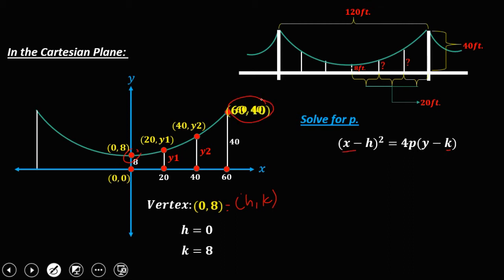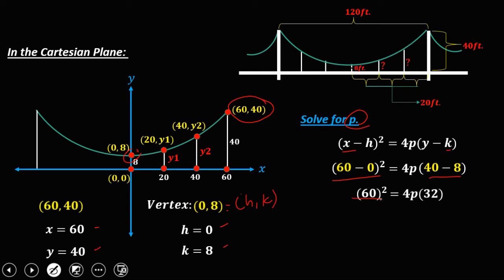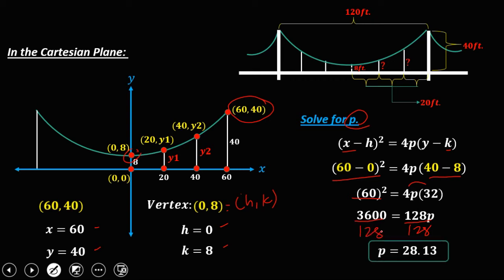Using the point (60, 40), where X = 60 and Y = 40, we substitute into the formula: (60 − 0)² = 4P(40 − 8). Simplifying: 60² = 4P × 32, so 3600 = 128P. Dividing both sides by 128 gives P = 28.13. Now that we have P, we can solve for the vertical cable lengths.